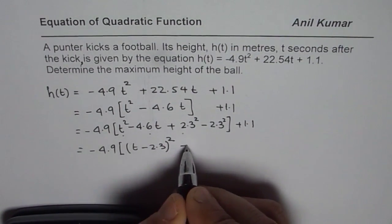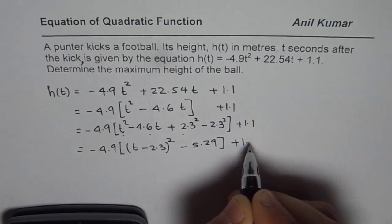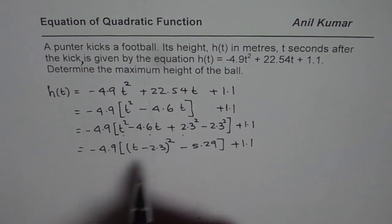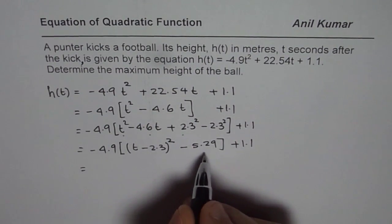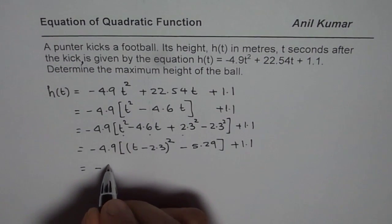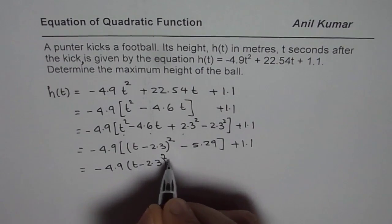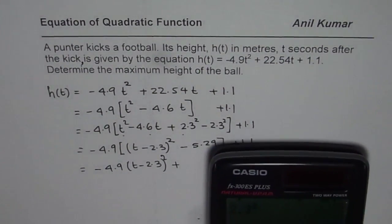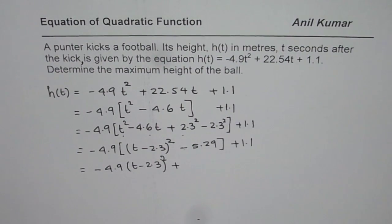So we have here -5.29 + 1.1. Now, we have to open the bracket. So when we open the bracket, 4.9 with negative sign gets multiplied with both the terms. So we get -4.9(t - 2.3)², minus and minus becomes plus. Let's multiply 5.29 by 4.9, equals to 25.921.